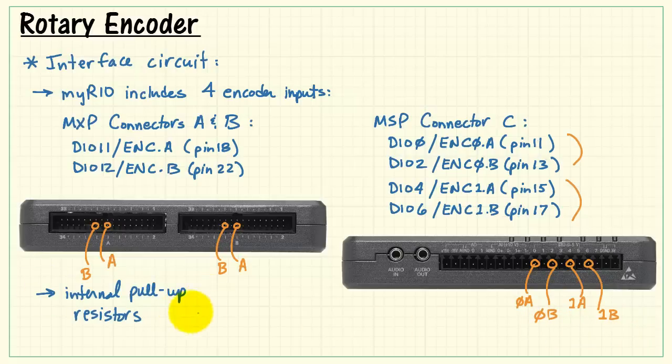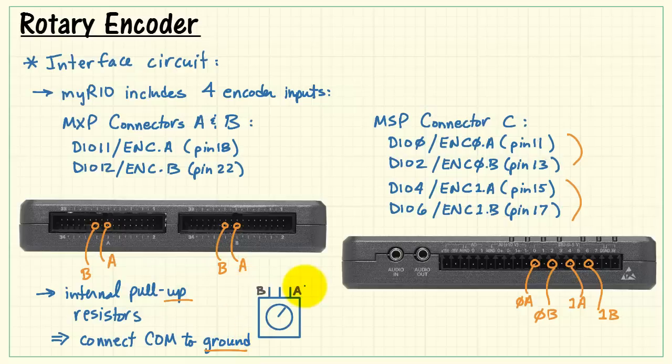Now we need to be aware of the difference between MXP and MSP. MXP connectors have internal pull-up resistors. That means that the common of the rotary encoder needs to be connected to ground. Conveniently enough, we have one of the ground pins available here, so we can simply connect the common in between and do the direct connection as I've indicated here.